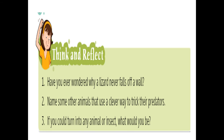Question three: if you could turn into any animal or insect, what would you be? This question is for you to answer yourself. If you were an animal like a lion, you would be the king of the jungle. Or if you were an insect like a butterfly, you would be flying freely. So think about what animal you would choose to be.